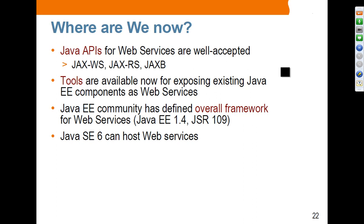The reason to use Java EE as the platform of choice for building and deploying web services is its proven track record in portability, scalability, and reliability, with no single vendor lock-in. Java EE web services support has been around since Java EE 1.4, released seven or eight years ago. Java SE 6 can also host web services because it comes with its own HTTP server, so you don't have to use the Java EE container if you want to deploy web services in a lightweight manner.